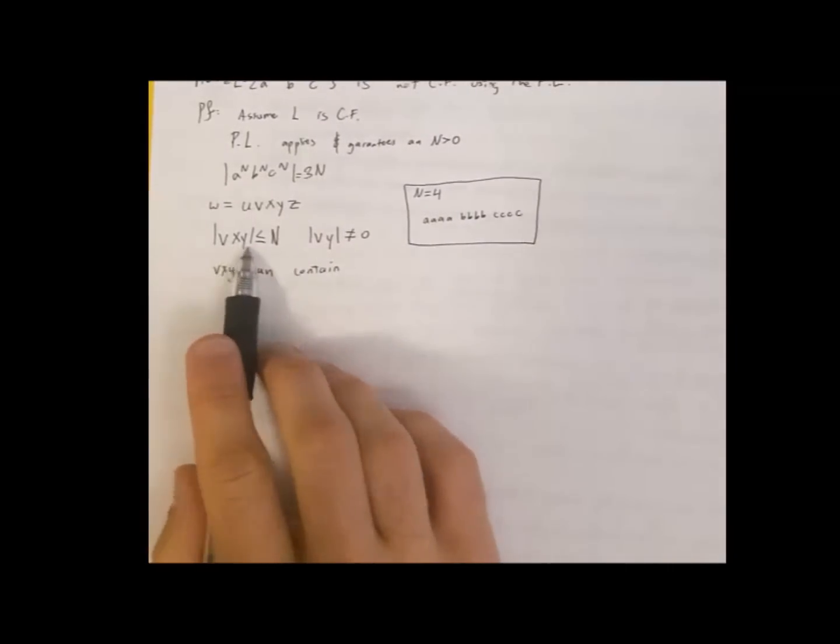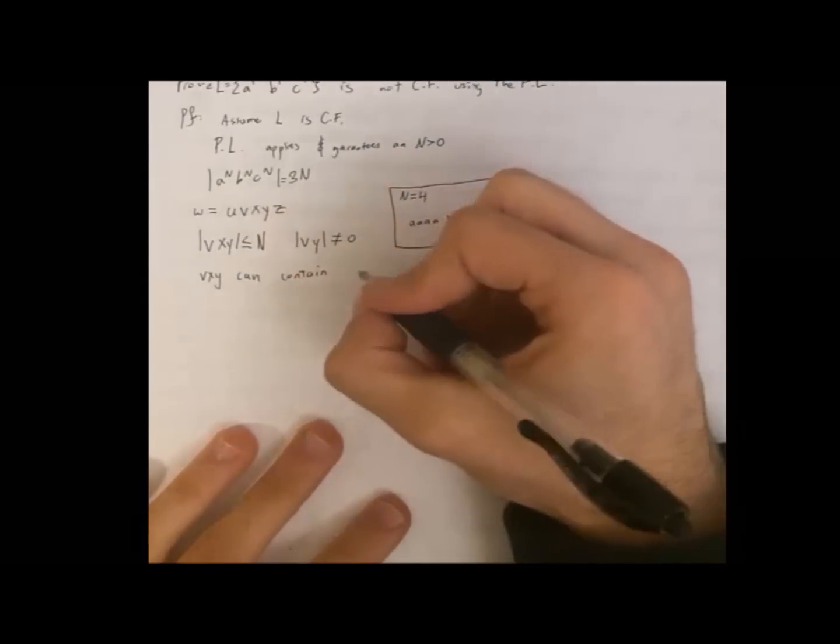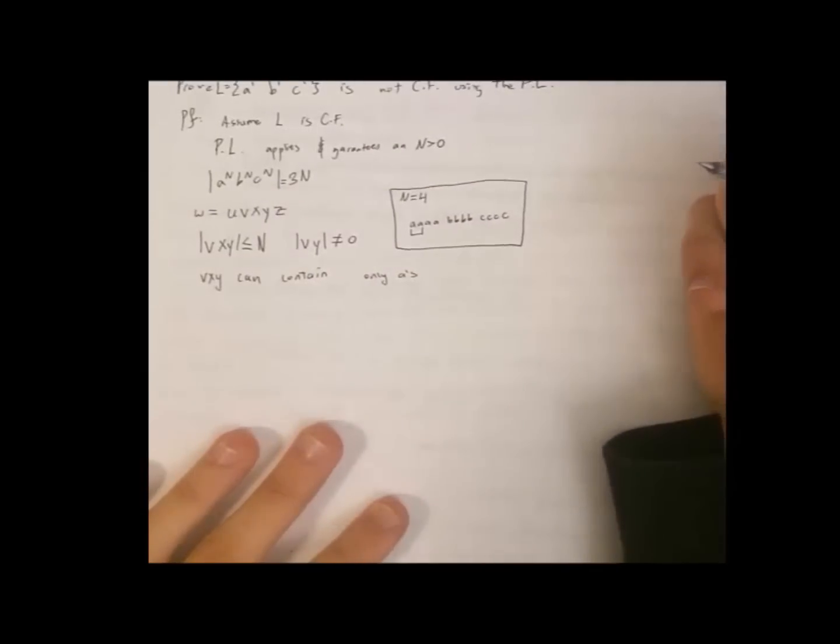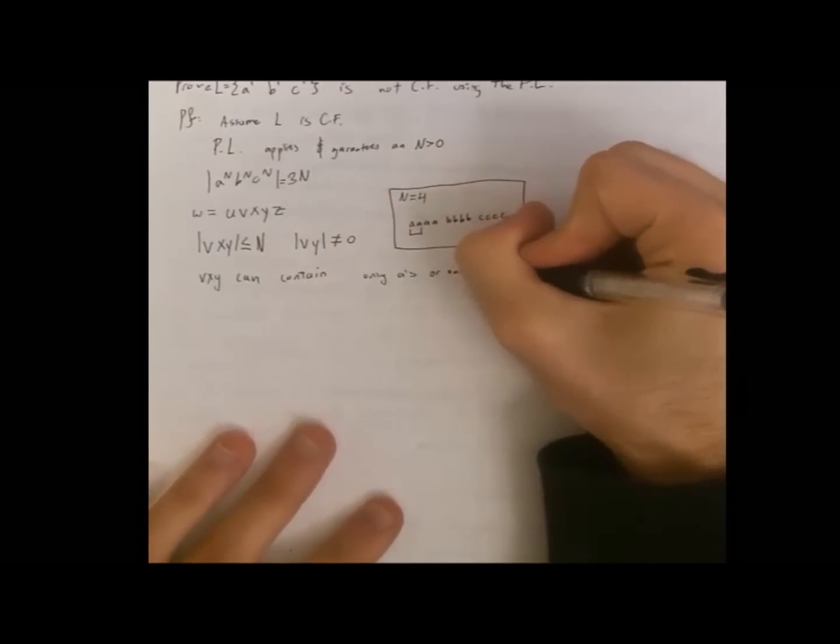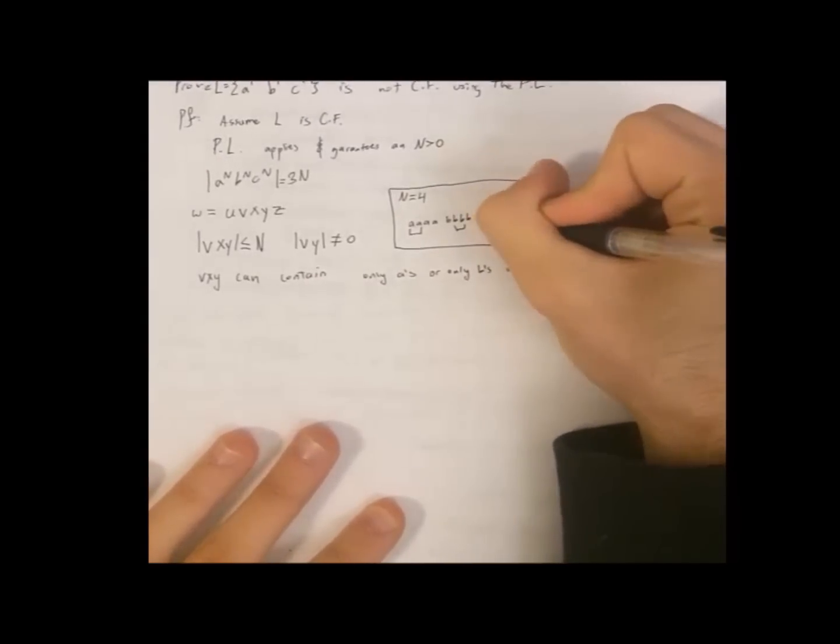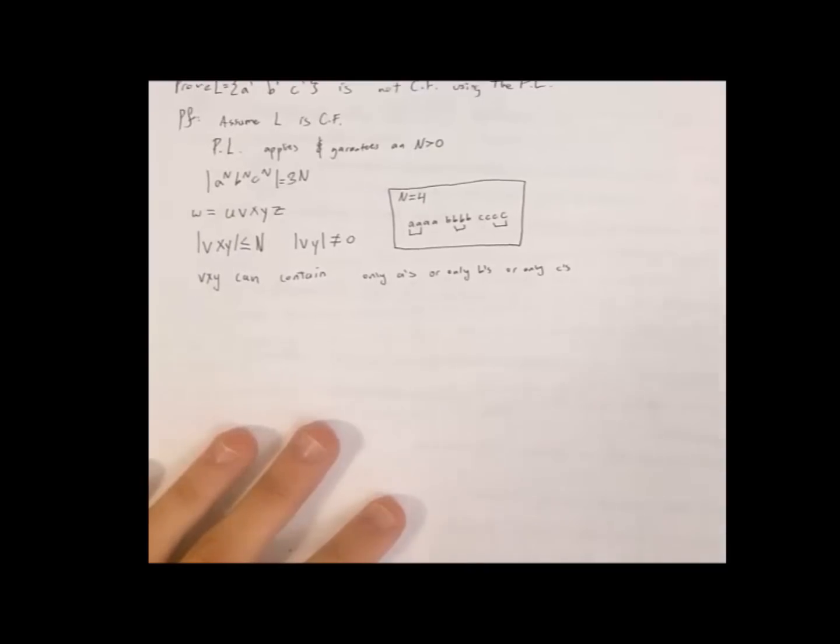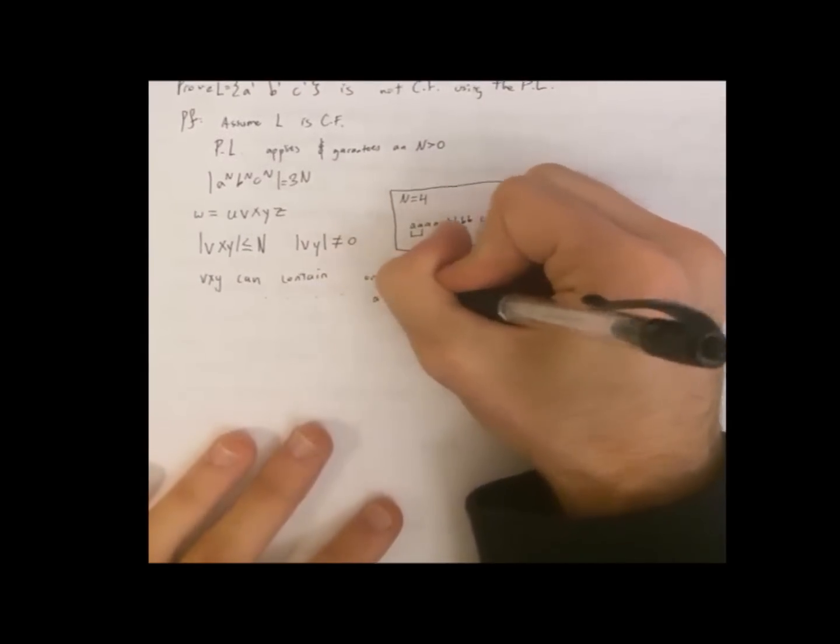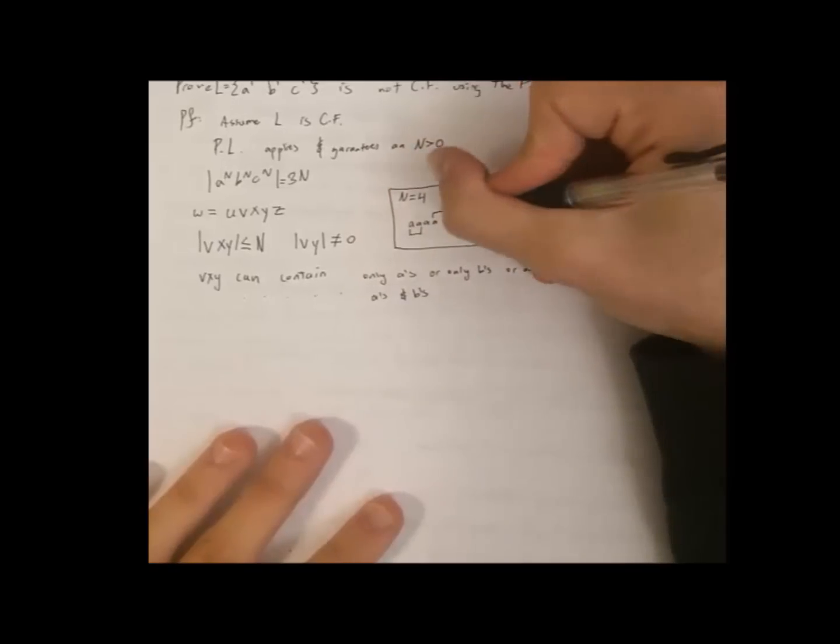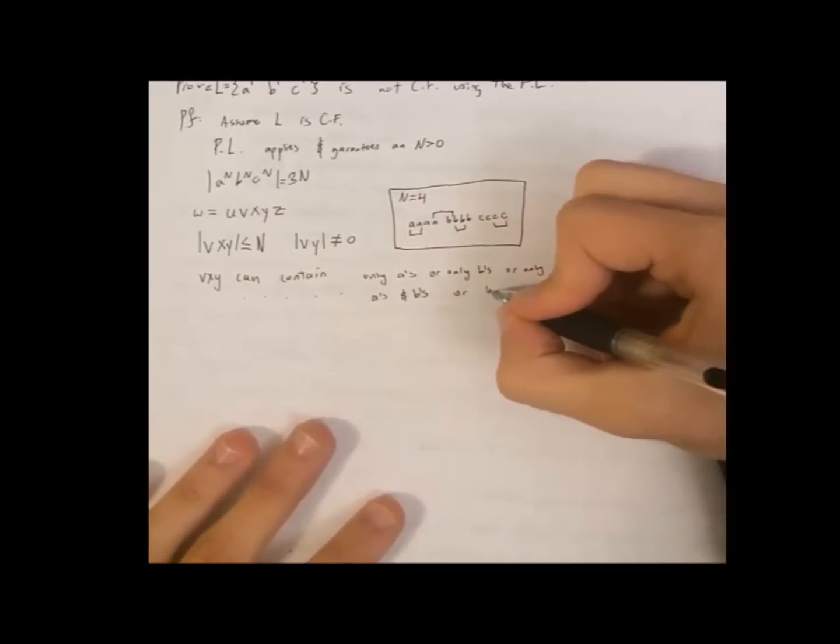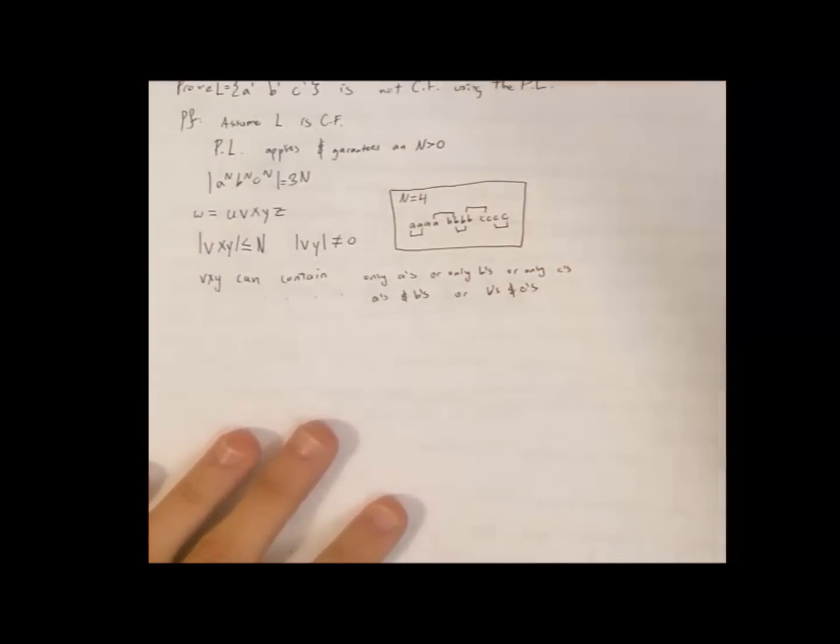Now, if we take something out of here, which is less than n, what could it be? Well, it could be only a's. Let's say we take this. That's two a's. That's in there, less than n. It could be only b's. Or only c's. Now, what else can it contain? It could contain a's and b's. Let's say we take this right here. a, b. That's less than 4. Or b's and c's. That would work.